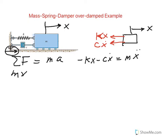The general differential equation with the mass spring damper is mx double dot plus cx dot plus kx equals zero.